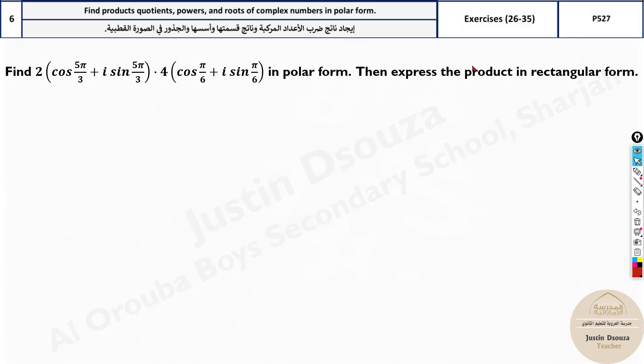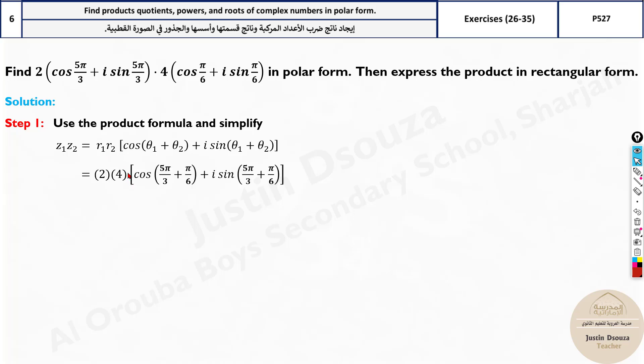Here we have a problem where we need to find the product in rectangular form. So we need to multiply them. Should remember the formula. All you do is multiply 2 times 4, and add the angles: 5π/3 plus π/6. Same thing for the imaginary part. Put it in the calculator.